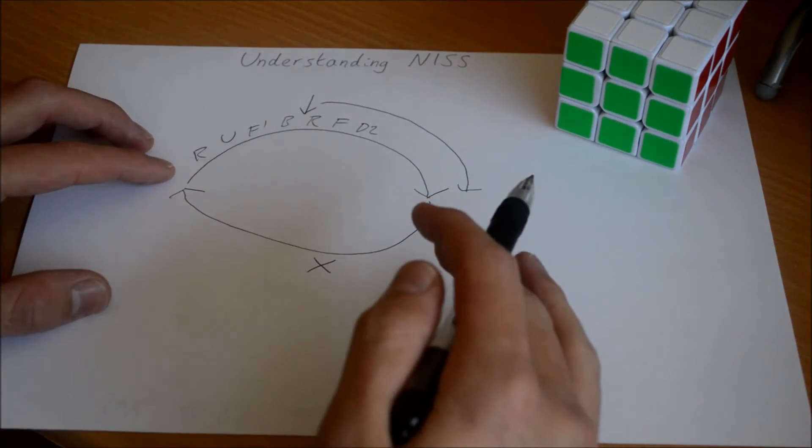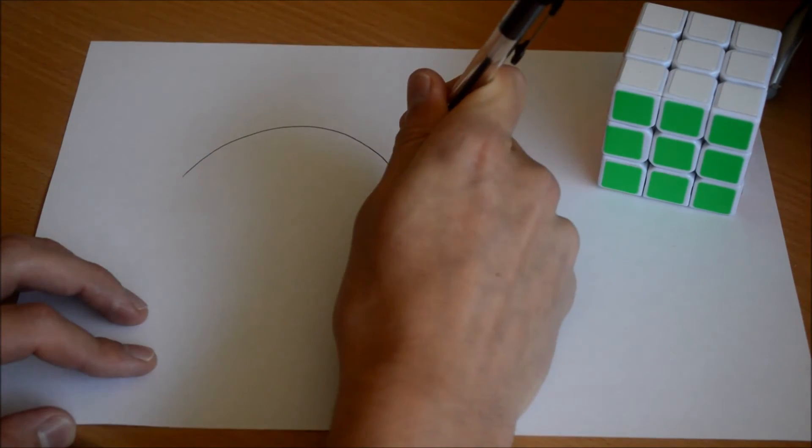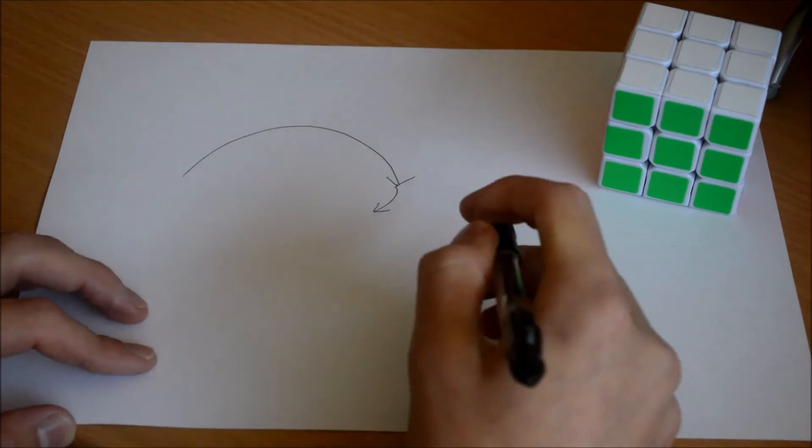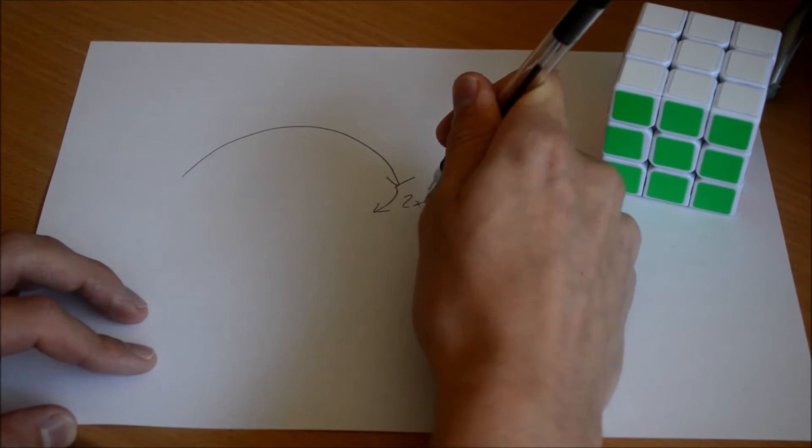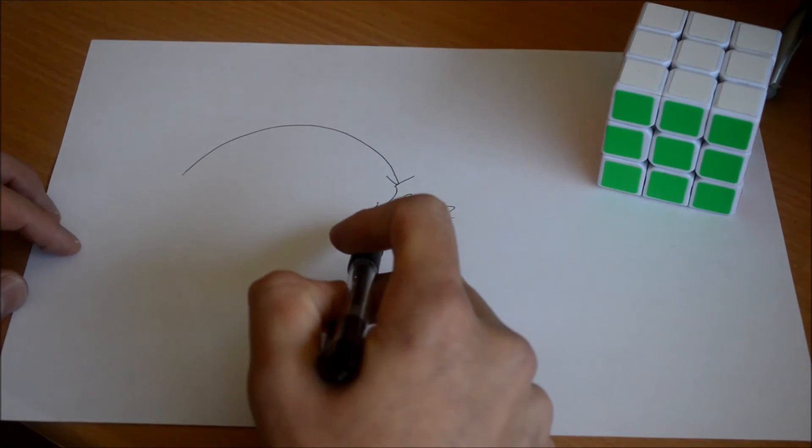We can see how NISS is working. Same generic scramble. You find the first piece of a solution, perhaps a 2x2x2 block, and then maybe you can't find anything good from that.